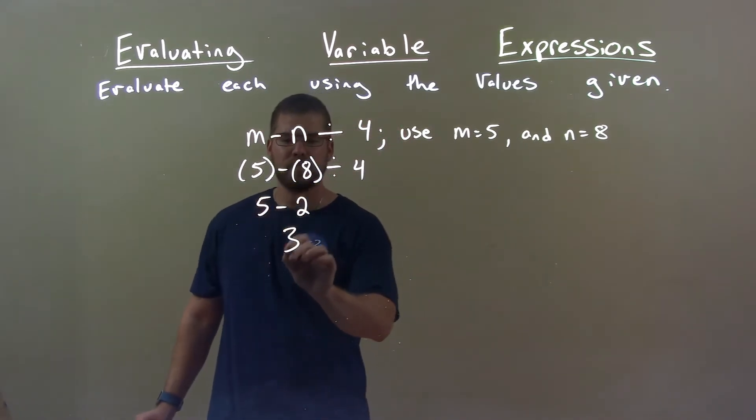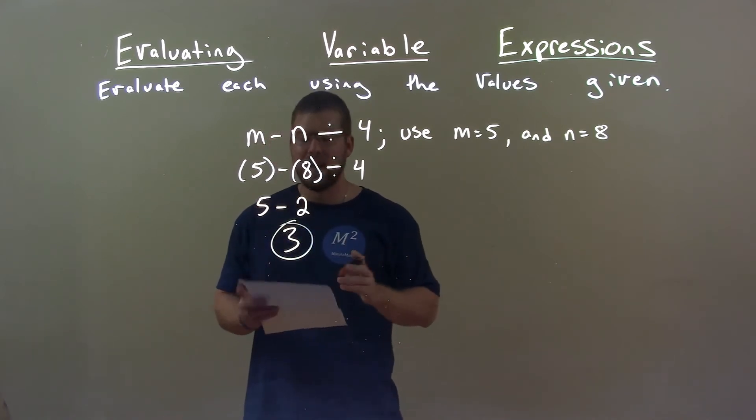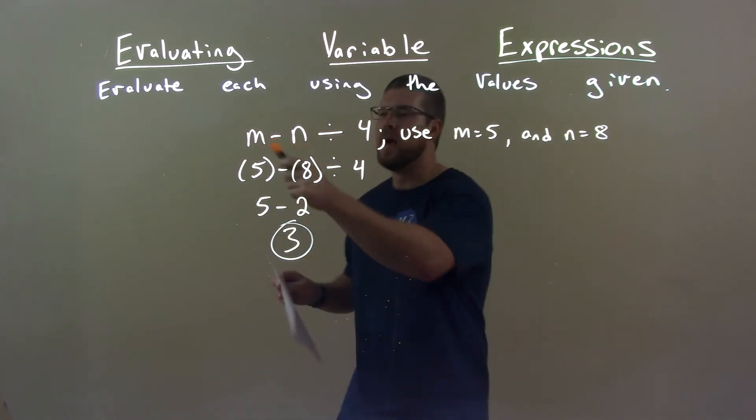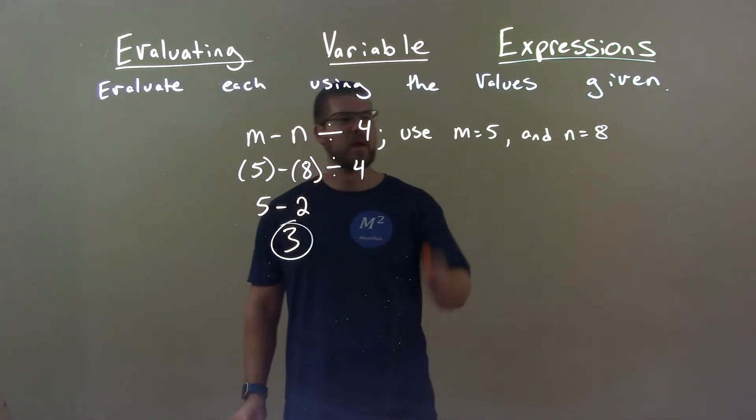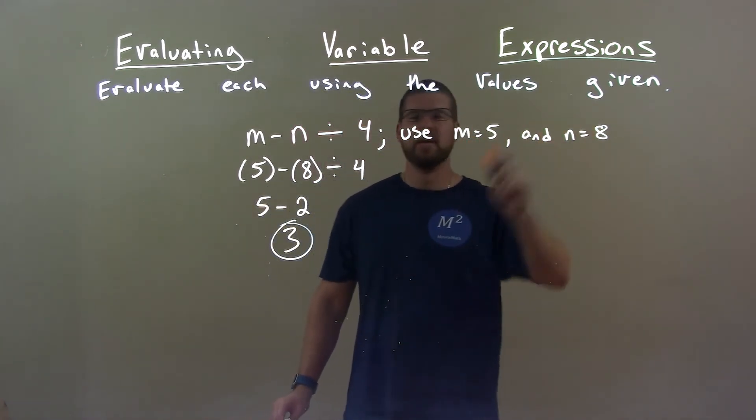5 minus 2 is 3 and so our final answer is just 3. So quick recap, we're given m minus n divided by 4 and we're going to use m equals 5 and n equals 8.